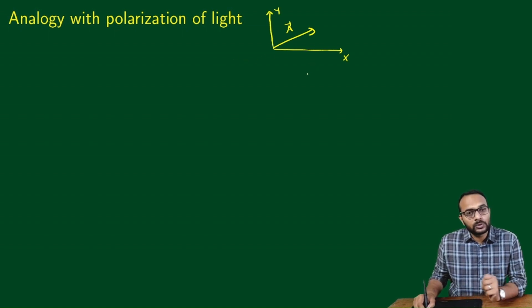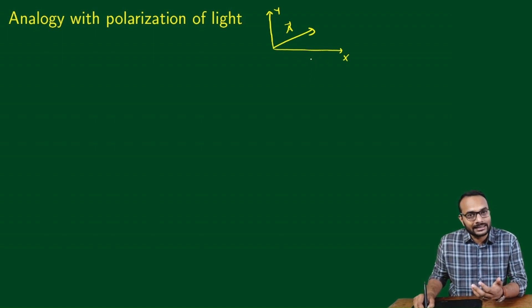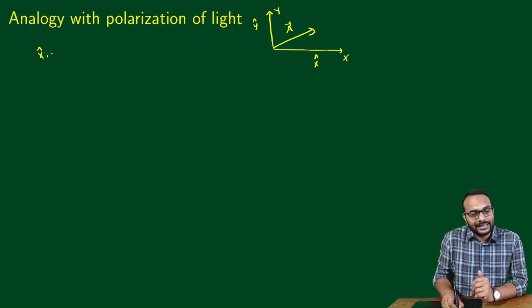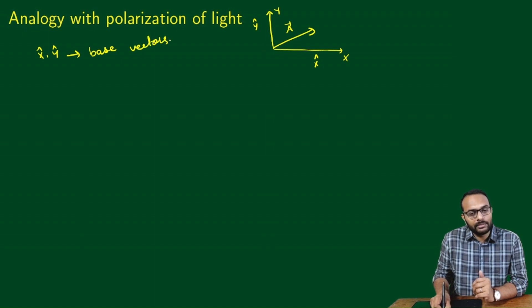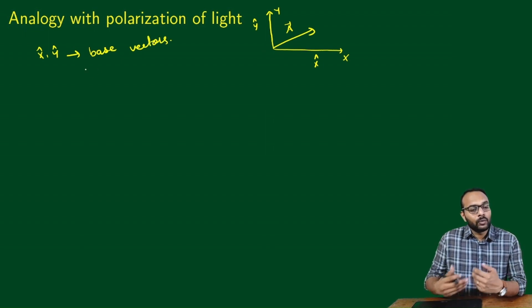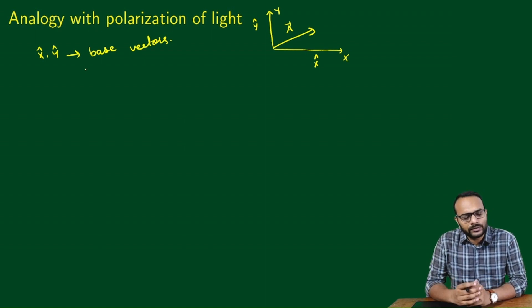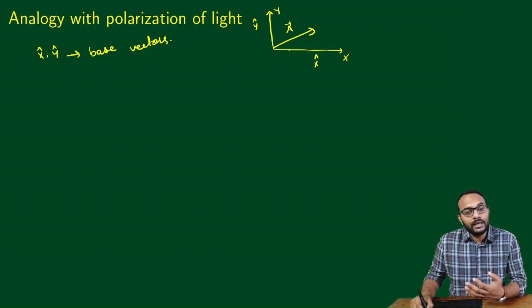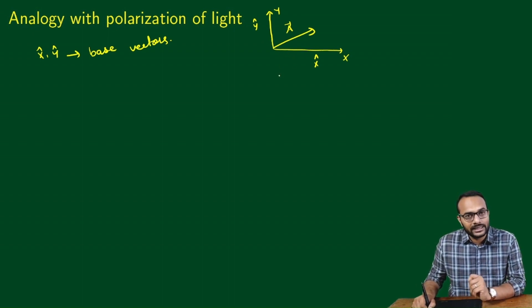We can also choose what we call base vectors — unit vectors along the coordinate axes. We can choose a unit vector X̂ and Ŷ, called base vectors. One of the key uses of these base vectors is that any vector in this plane can be written as a linear combination of these base vectors.